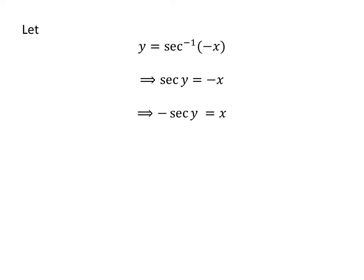Taking the minus sign to the left side of the equation, we get minus secant of y is equal to x. As we know, the trigonometry identity: minus secant of y is equal to secant of π minus y.